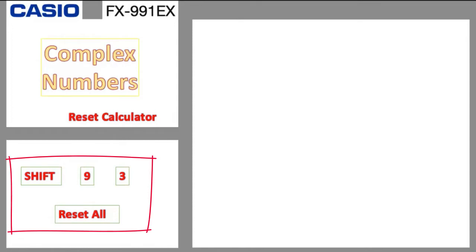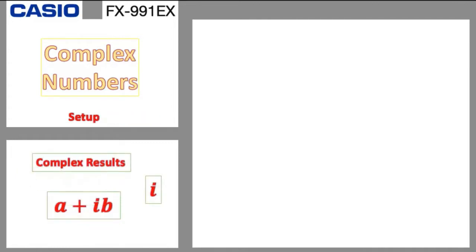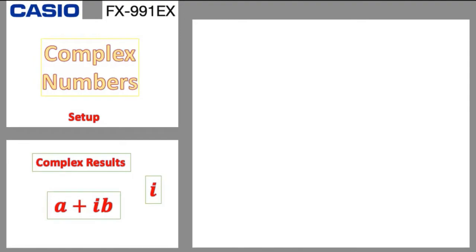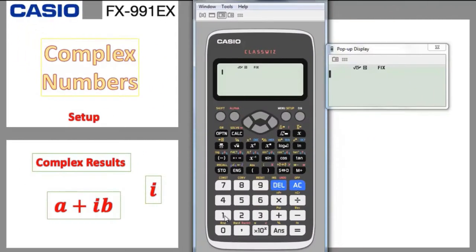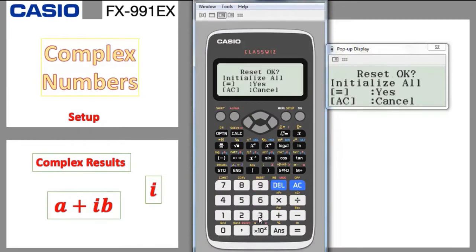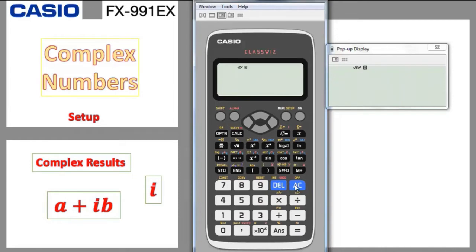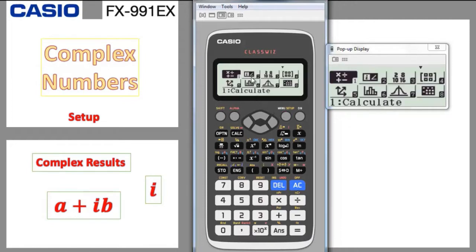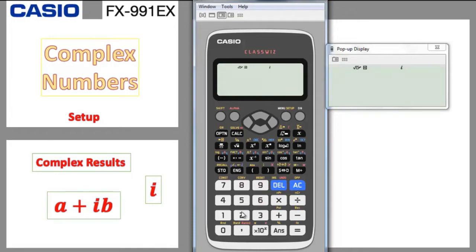After we finish the reset, we go for question number one. A complex number is written in the shape of A plus IB, but the calculator should be in the complex mode which is the Cartesian status. First do Shift 9 3 equal and AC so the calculator is in reset mode. To go to complex mode, click on menu and here is number 2 — click 2 and the calculator is in the complex mode.